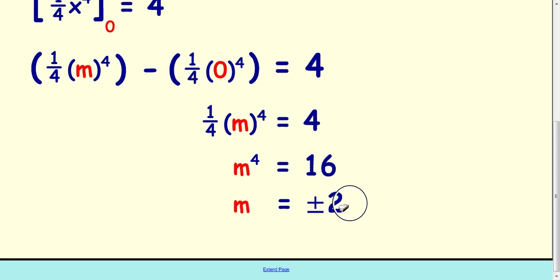Therefore, m is equal to plus or minus 2. 2 times 2 times 2 times 2 makes 16, and negative 2 times negative 2 times negative 2 times negative 2 also equals 16.